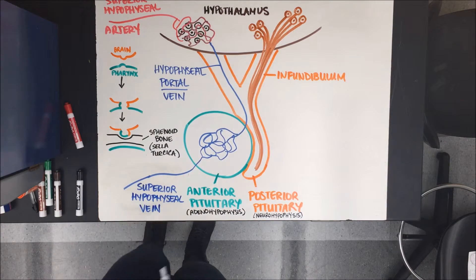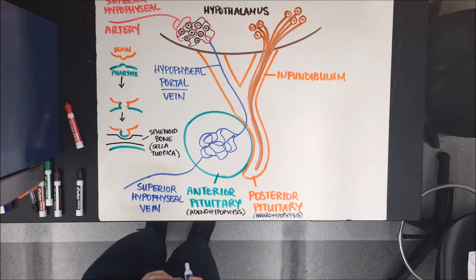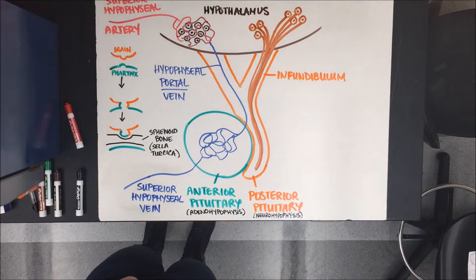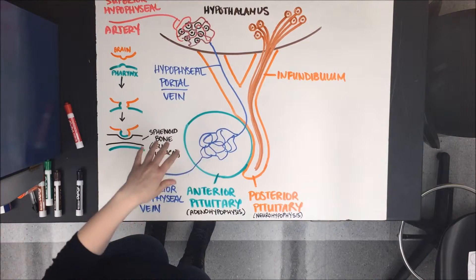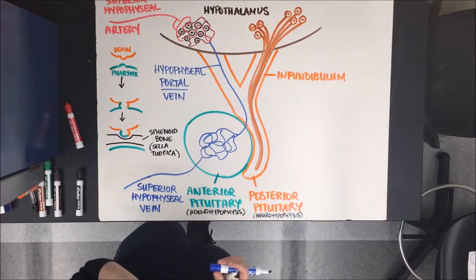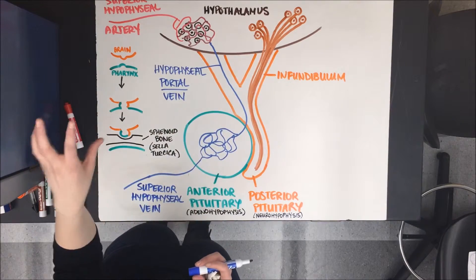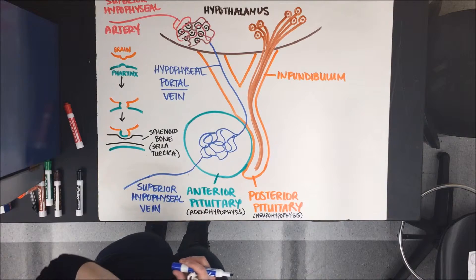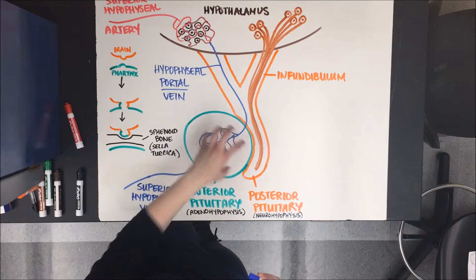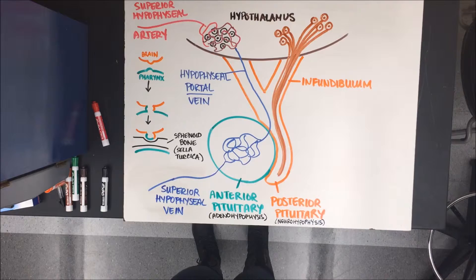Let's talk about the fact that we have a portal system here — there are only a few in the human body, and this is one of them: the hypophysial portal system. A portal system is a series of two capillary beds in a row. Usually blood comes from the heart, ends in a capillary bed, becomes deoxygenated, and returns to the heart. In a portal system, you have a first capillary bed where blood is oxygenated then deoxygenated, and then a second capillary bed that deals only with deoxygenated blood.